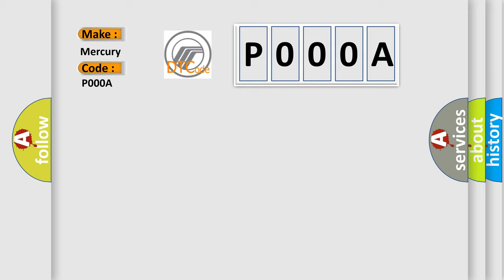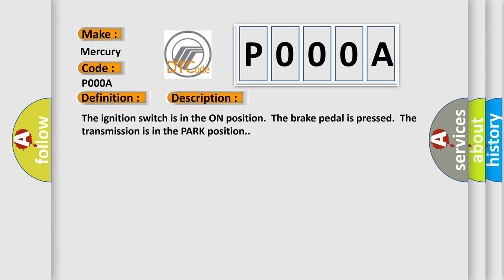The basic definition is: gear shift unlock circuit low. And now this is a short description of this DTC code. The ignition switch is in the on position, the brake pedal is pressed, and the transmission is in the park position.